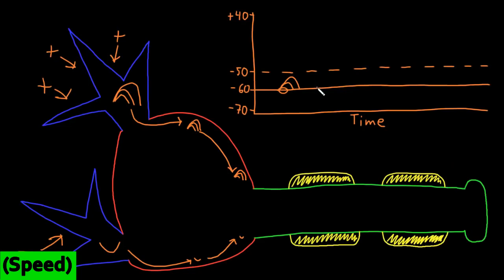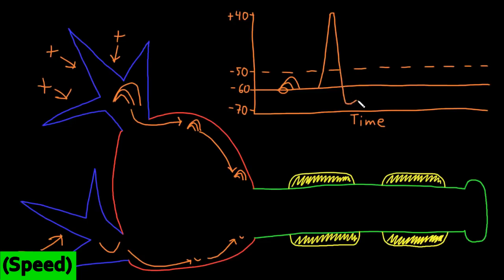The shape of an action potential is fairly characteristic. It starts with summation of graded potentials getting it to the threshold value, but then instead of just decaying back down to the resting potential like graded potentials do, it has this huge rise to a very positive membrane potential, where it's become more positive inside the neuron membrane than outside — the reverse of normal. After this rising phase, it has a short plateau, then a rapid falling phase back down to the resting potential, but it actually keeps going more negative than the resting potential, plateaus, and then has a slower return to the resting potential.